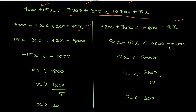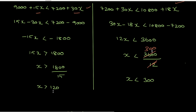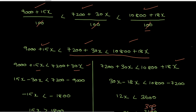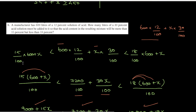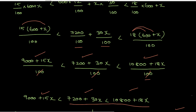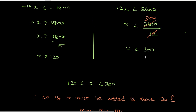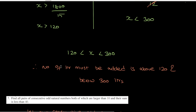For the second inequality: 30x minus 18x is 12x, and 10800 minus 7200 is 3600. So x is less than 300. Therefore, x is greater than 120 and x is less than 300. The number of litres that must be added is above 120 and below 300 litres.